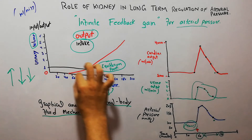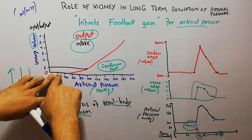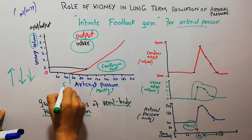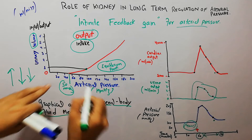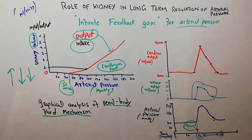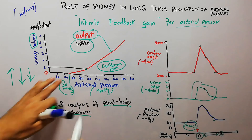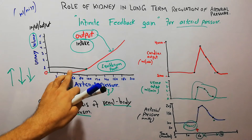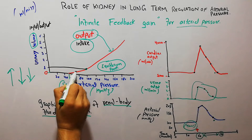When the arterial pressure starts increasing, up to the level of 50 mmHg — as discussed in the previous lecture — the urine output, shown by the red color curve, is zero. It is touching the zero point and there is almost no output. But as soon as the arterial pressure starts increasing beyond 50 mmHg, the urinary output also starts increasing.